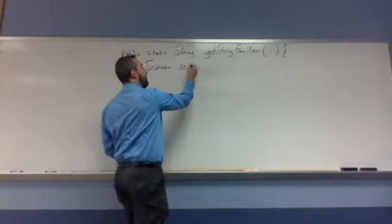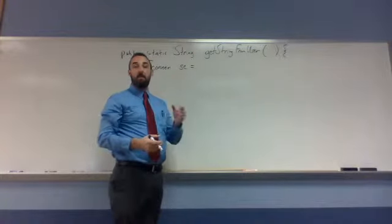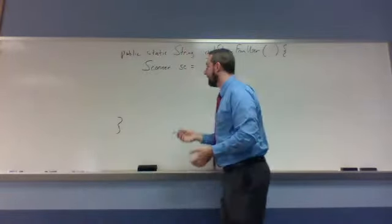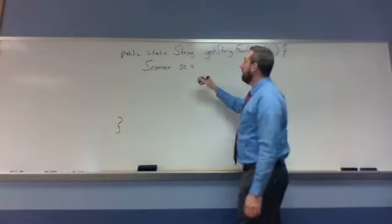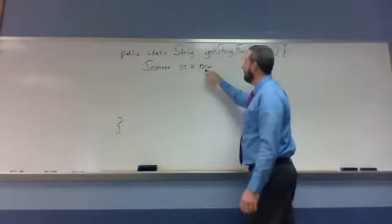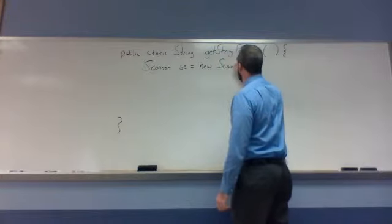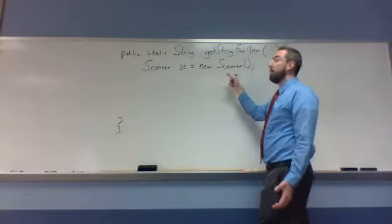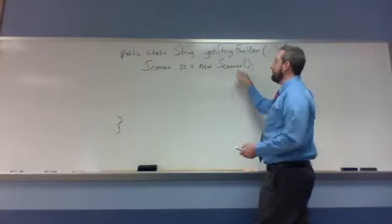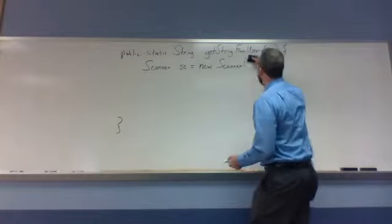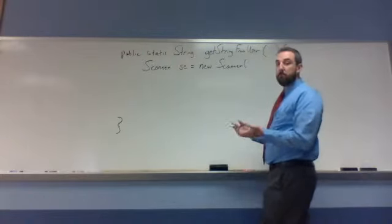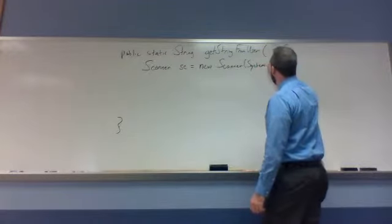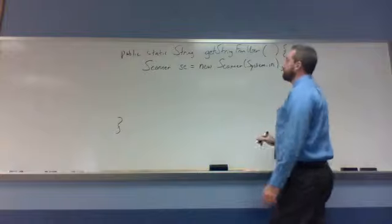So we have type, name, and then the information. A Scanner is not a simple piece of information like a number or a letter - it's not a primitive type, it's an object. Because objects are more complicated than primitive types, you can't just write 7 or a word here. Instead, we write the statement: new Scanner with parentheses. This is called a constructor - it's a special method that builds one of those objects. But we need to tell it what to scan, so we put a parameter inside the parentheses: System.in, which is the keyboard.